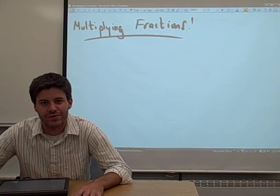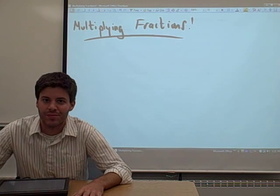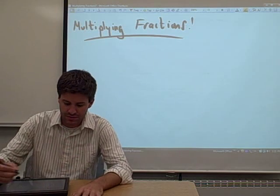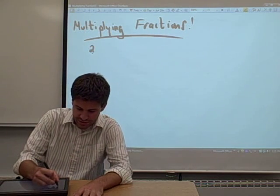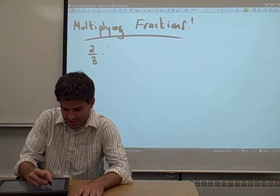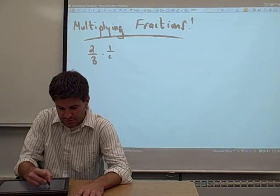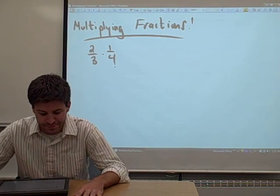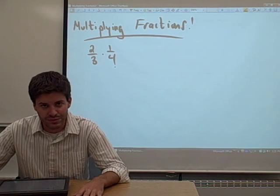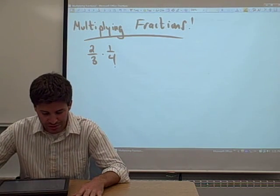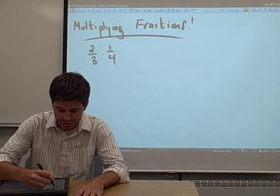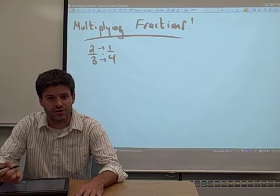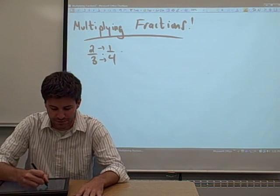Hi, in this video we're going to talk about multiplying fractions. Here's an example for you. We want to multiply two thirds times one fourth, and this is a pretty simple process. What we do is we multiply straight across the numerator and we multiply straight across the denominator.